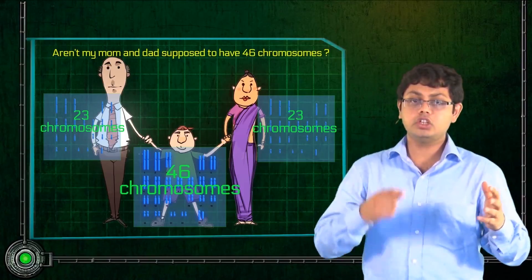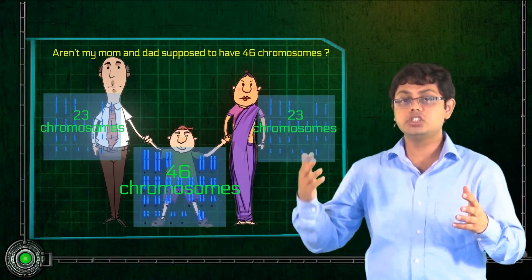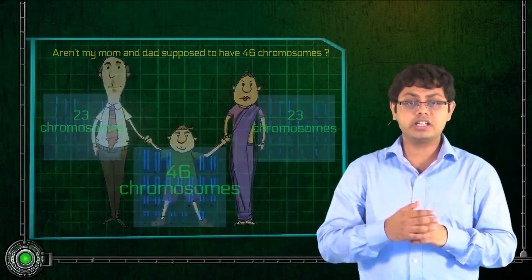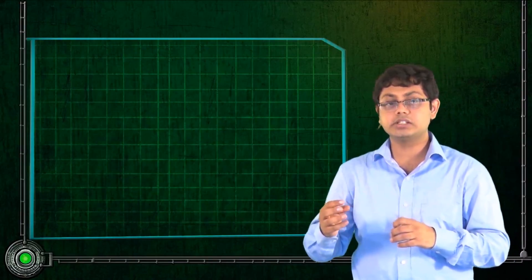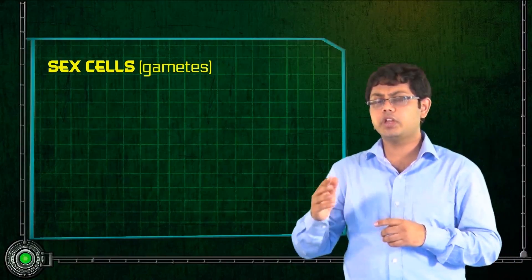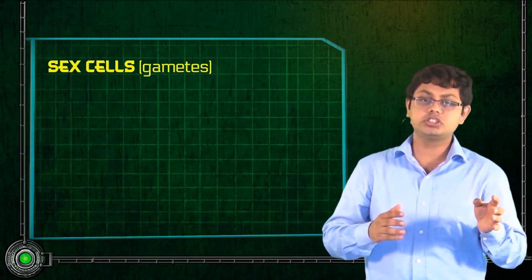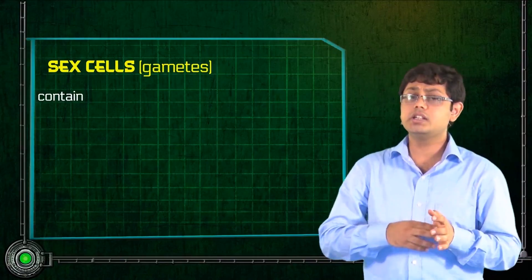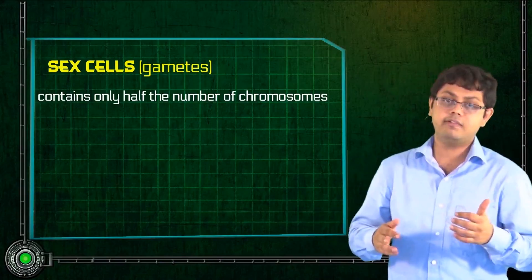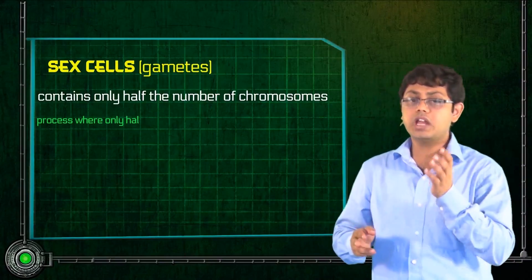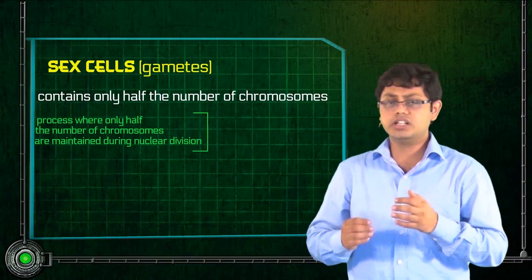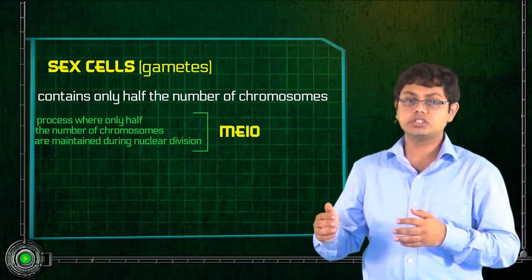Most of the cells of our body — yours, mine, your dad's, your mom's — all have 46 chromosomes. But there are certain specialized cells called sex cells or gametes which divide in a specific way in special structures in the body so that they contain half the number of chromosomes as the other cells have. This process, where only half the number of chromosomes are maintained during nuclear division, is known as meiosis.